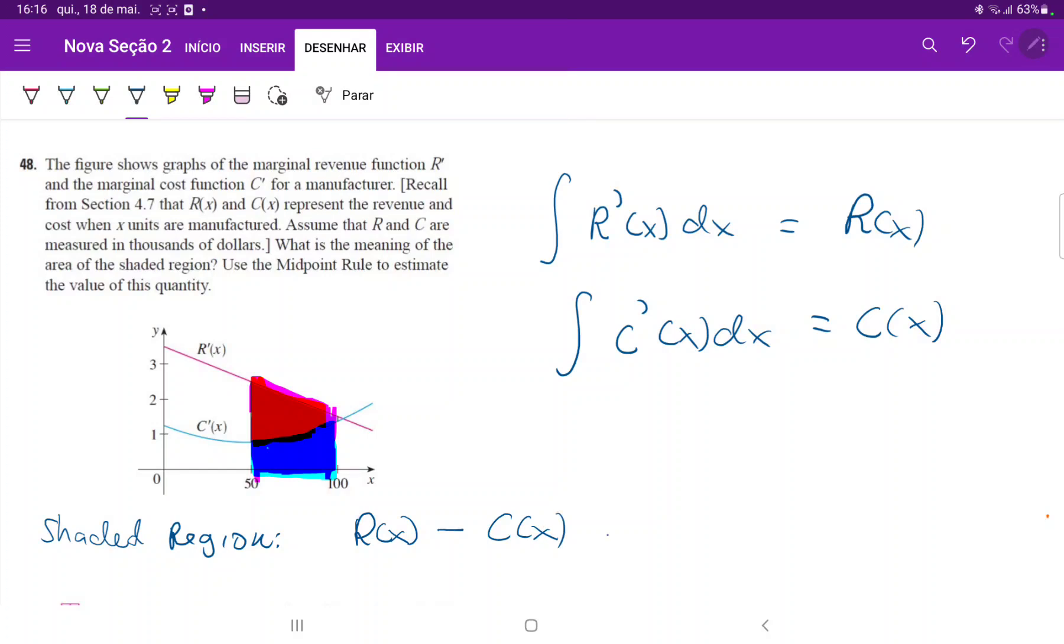So when we have the revenue minus the cost, this is the definition of profit. It's whatever you get in your money minus whatever you spend. So this is the profit. So now all we want to do is calculate this profit using the midpoint rule.